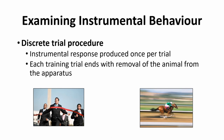Discrete trial procedures involve an instrumental response produced once per trial. You put the cat in the puzzle box and measure one thing: how long it takes to get out. When done, you record one measure — the operant response occurred once, and the trial is over. Each trial ends with removal of the animal from the apparatus; if a rat is running a maze, when they find the goal, you take them out. To start a new trial, you pick the animal up and put them back at the beginning.